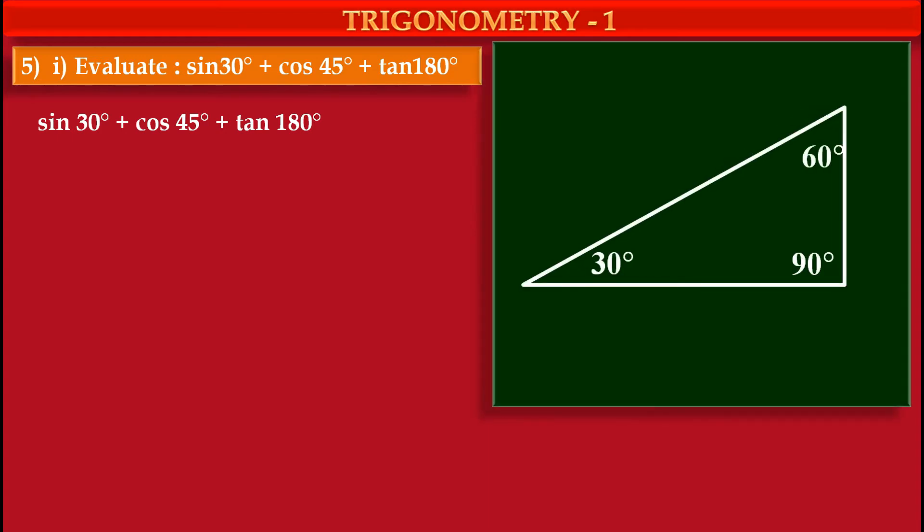Now, we have to first find the value of sin 30°. So we have to draw one right angle triangle having angles 30°, 60°, and 90°. We know the ratio of this side, side opposite to 30° is 1, then hypotenuse is 2 means opposite to 90°, and side opposite to 60° is root 3. This is a common ratio for 30°, 60°, 90° degree triangle.